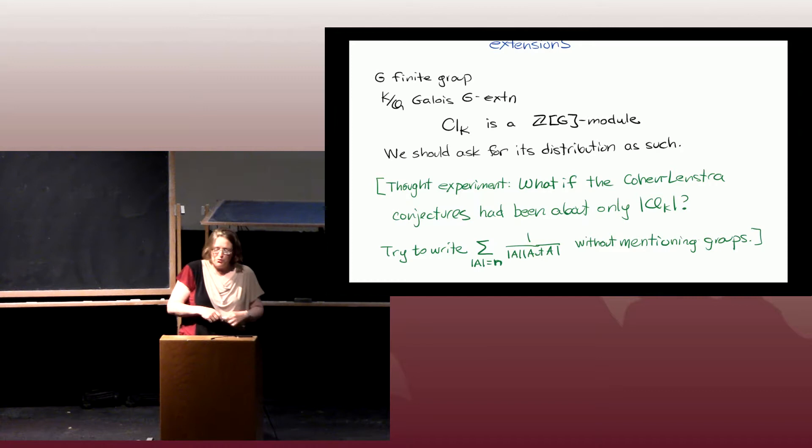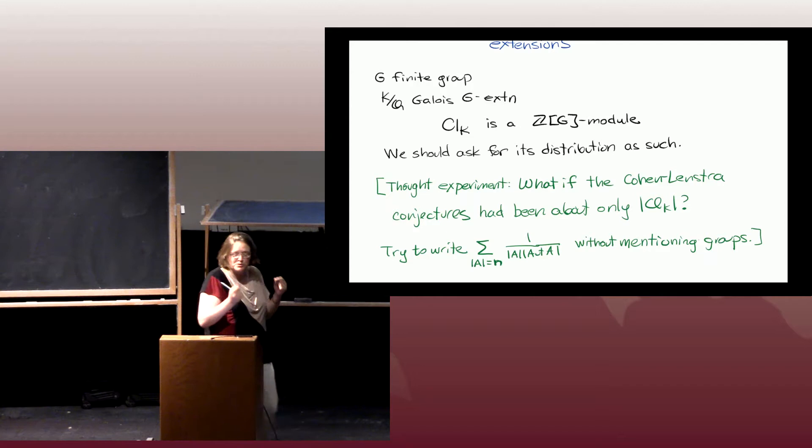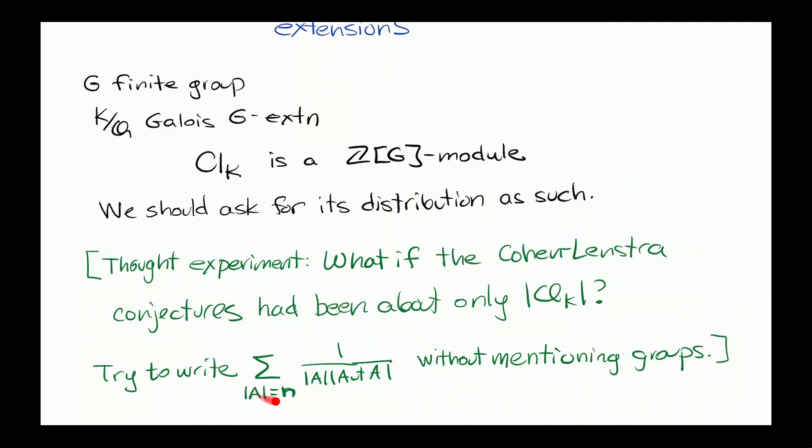Here's a thought experiment. When we were talking about imaginary and real quadratic fields, we asked about the distribution of the class group, not just the class number. If you had tried to just record the size — for some number n, taking the sum over all finite abelian groups of order n — you'd get some really garbage expression in terms of n that is completely impenetrable. But once you consider the group structure, each group occurs with a relative probability, and those terms all have a lot of meaning and are much easier to understand.